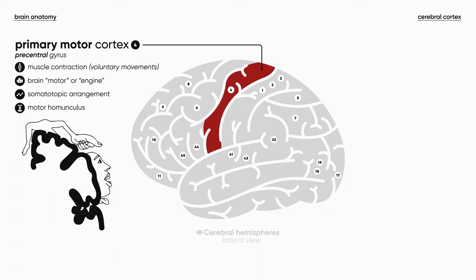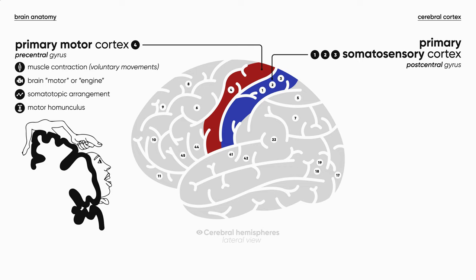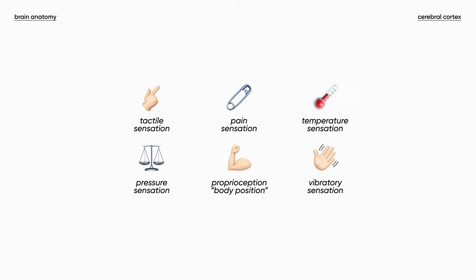Posterior to the central sulcus, we have the postcentral gyrus. The cortex of this gyrus is called the primary somatosensory cortex — Brodmann areas 1, 2, and 3. It receives and processes somatic sensory information from the contralateral side of the body, including sensations like touch, pain, temperature, pressure, vibration, and of course proprioception or body position feeling.